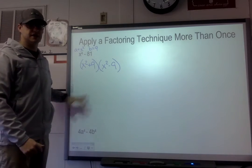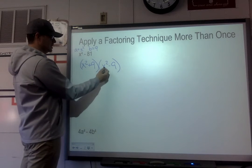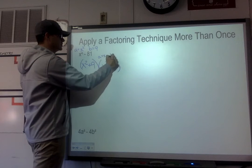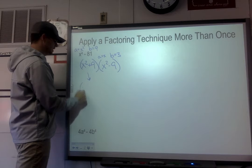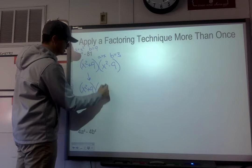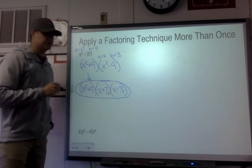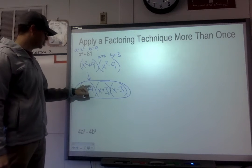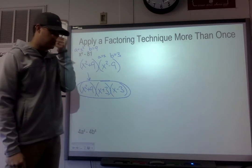It would be easy to stop there, but look again — we have another difference of squares. x² - 9: both x² and 9 are perfect squares, so a is x and b is 3. We bring down (x² + 9) and factor (x² - 9) into (x + 3)(x - 3). Note that x² + 9 cannot be factored this way — the rule only works for subtraction, not addition.